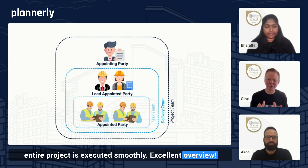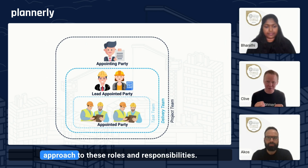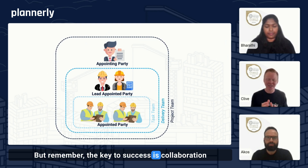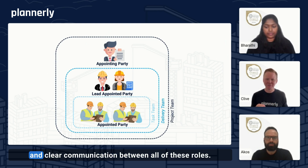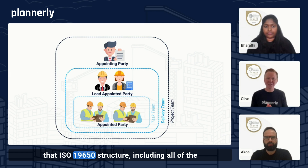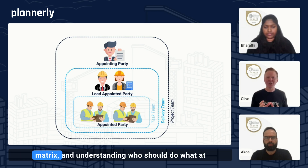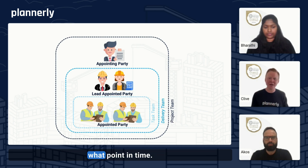It's clear that ISO 19650 creates a structured approach to these roles and responsibilities. The key to success is collaboration and clear communication between all of these roles. Now let's explore how Plannerly can support that ISO 19650 structure, including all of the roles and responsibilities, and defining a clear responsibility matrix — understanding who should do what at what point in time.